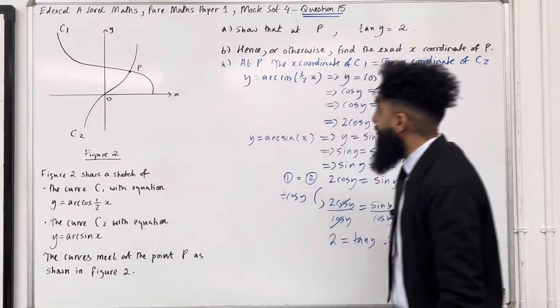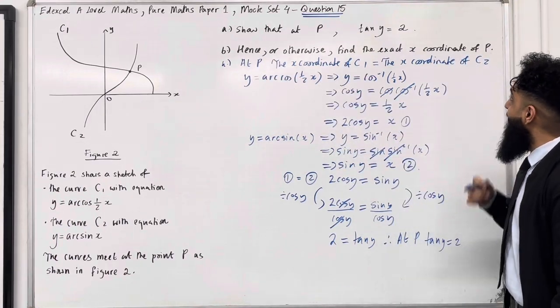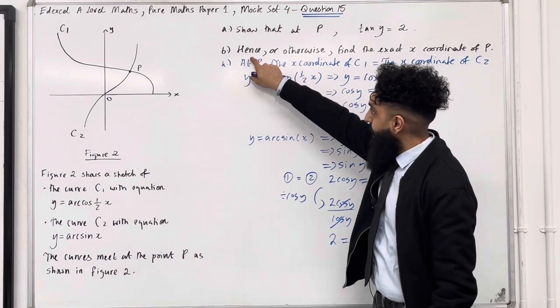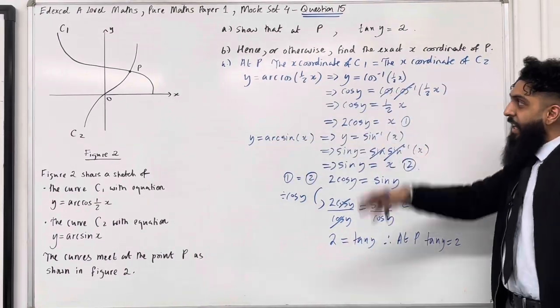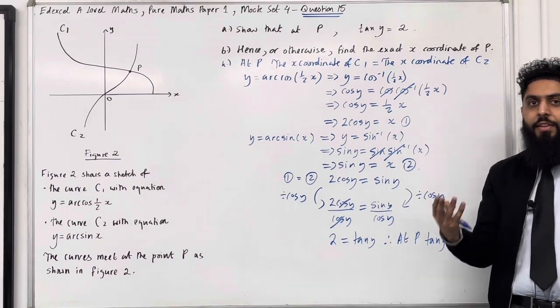Let's have a look at the next part, which is Part B. Hence, or otherwise, find the exact coordinate of P. So the word hence is trying to indicate that we must refer back to our answer in Part A. Now pause the video, write your solution to Part B. Once you've got your complete solution, then play the video.